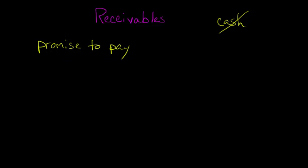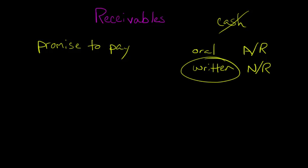When we think about this, there's an oral promise to pay — someone just tells you they'll pay you — or we could have a written promise to pay, and so now we have different types of receivables. An oral receivable is basically called accounts receivable, which we normally abbreviate A/R. A note receivable is a written promise to pay.